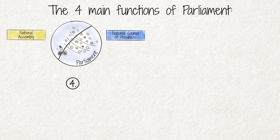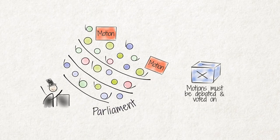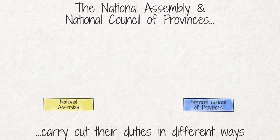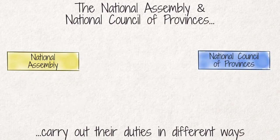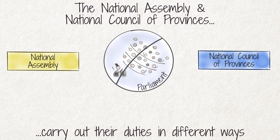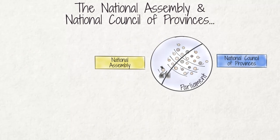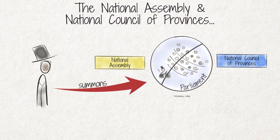The fourth function is that parliament provides a national forum for consideration of important issues. To achieve this goal, political parties table motions that must be debated and voted on. The National Assembly and the National Council of Provinces carry out their duties in different ways. Each house meets in its own plenary session to pass legislation and debate issues. In extraordinary circumstances, they can meet in joint sittings to debate important issues or to listen to important speeches. Beyond regularly scheduled plenary sessions, the president may at any time summon parliament for an extraordinary sitting.